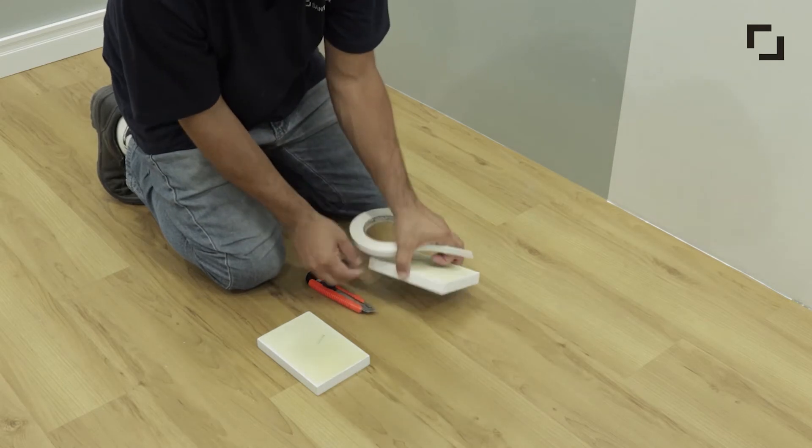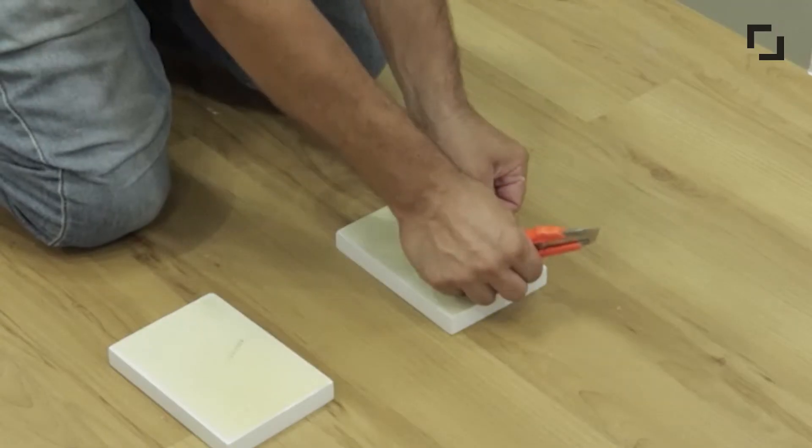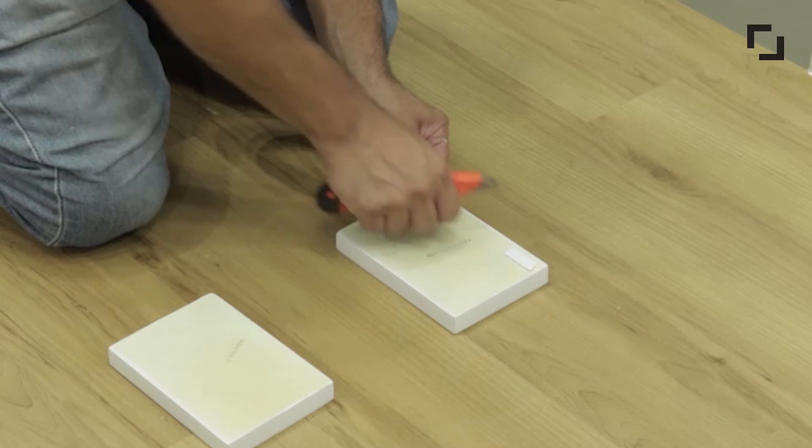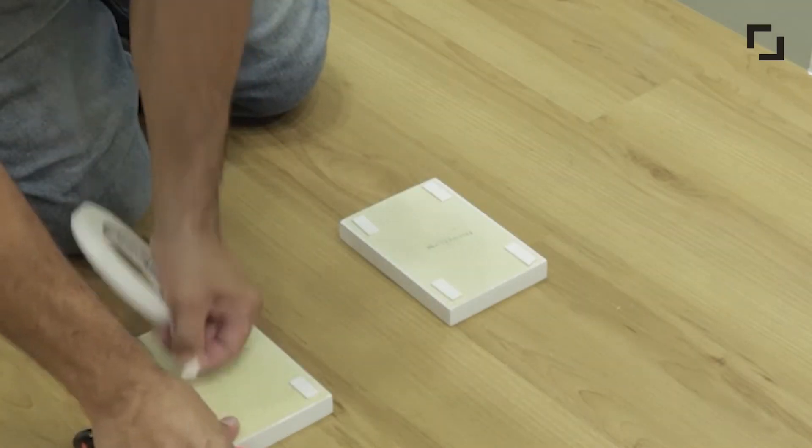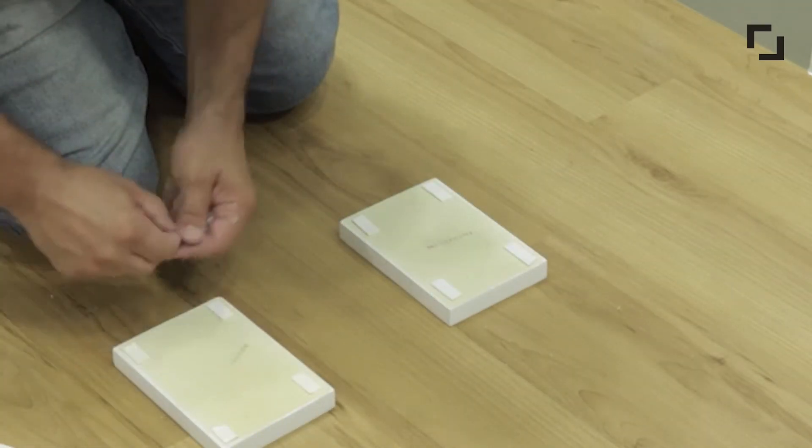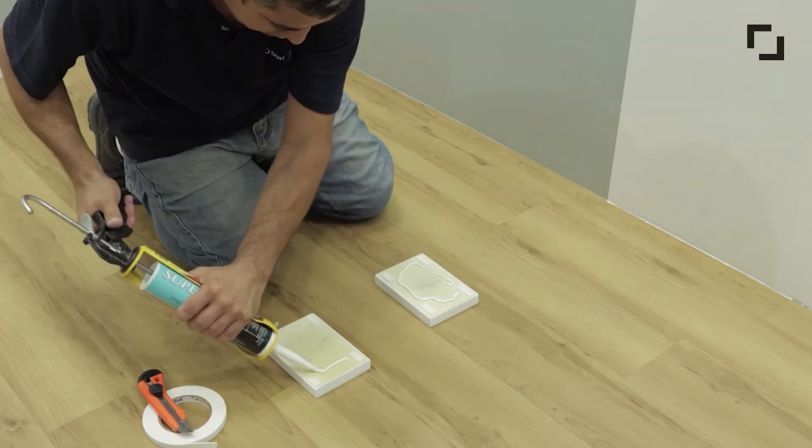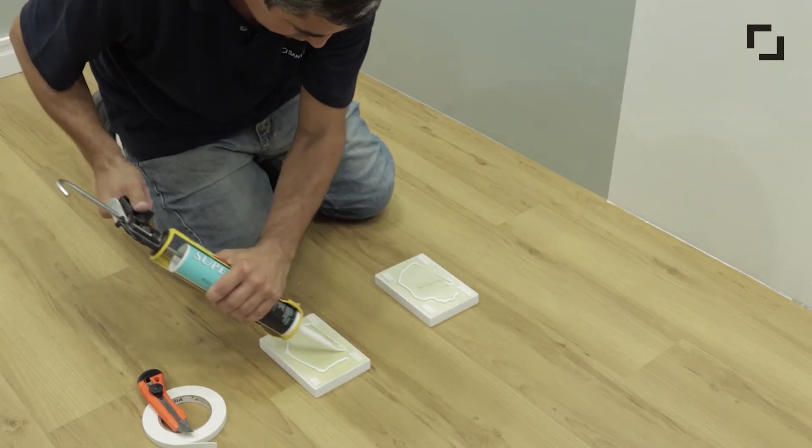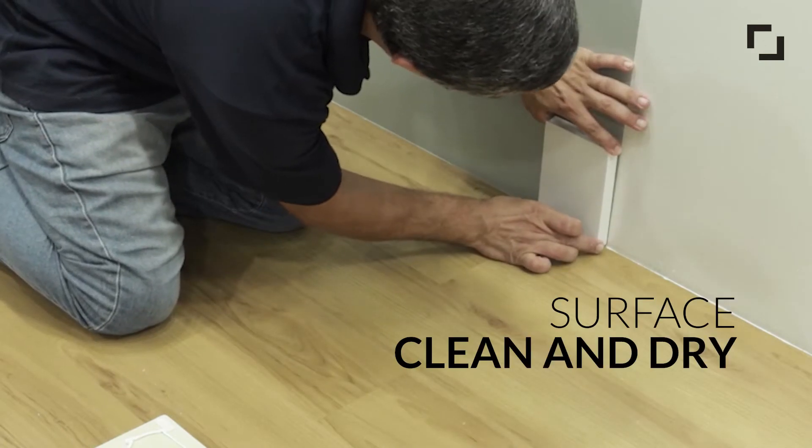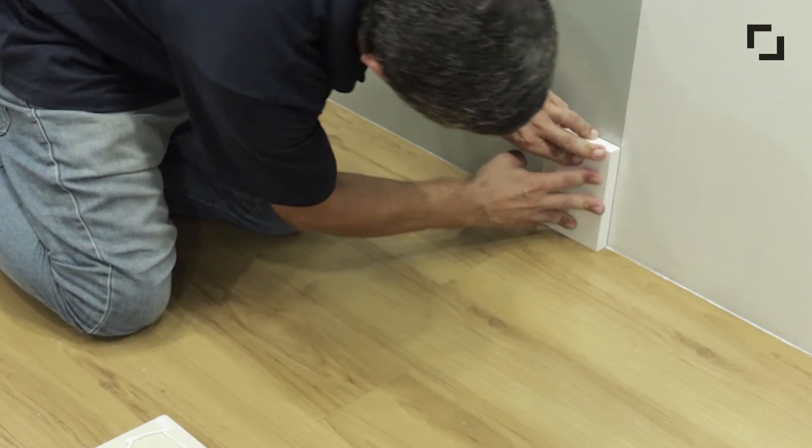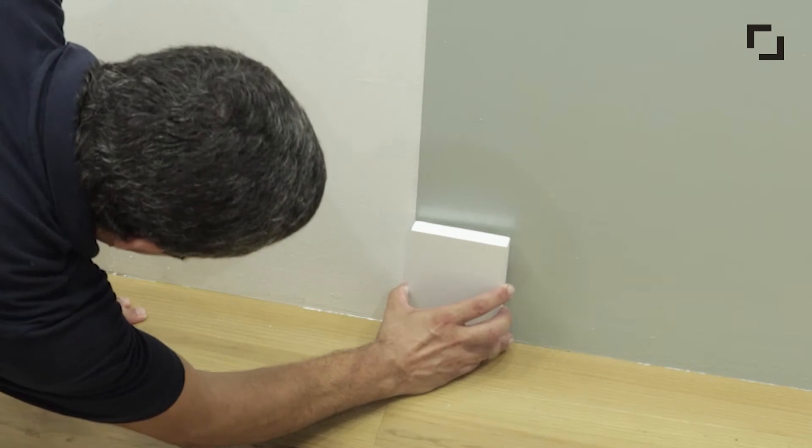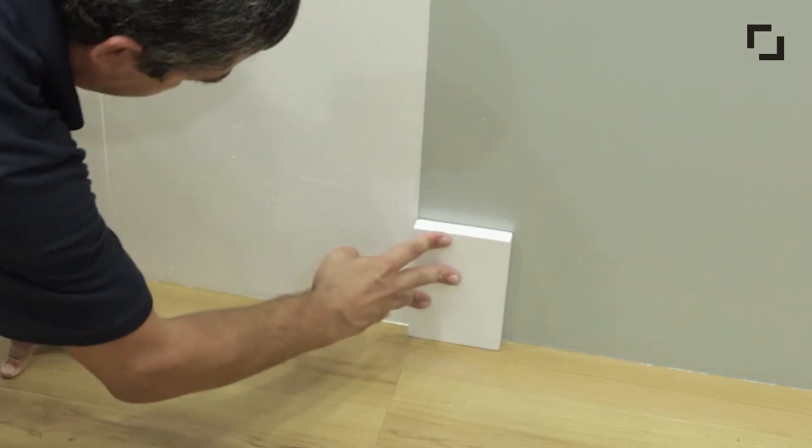First you must glue the plinth block on the wall. Apply the double-sided tape to the back of the product, remove the tape protection, and apply the super adhesive. Make sure the surface is clean and dry, then glue the plinth block. Press the product against the wall to fixate it well.